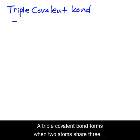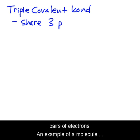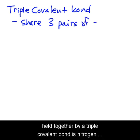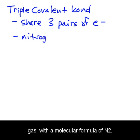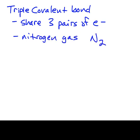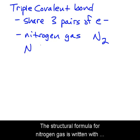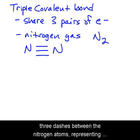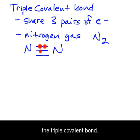A triple covalent bond forms when two atoms share three pairs of electrons. An example of a molecule held together by a triple covalent bond is nitrogen gas, with a molecular formula of N2. The structural formula for nitrogen gas is written with three dashes between the nitrogen atoms representing the triple covalent bond.